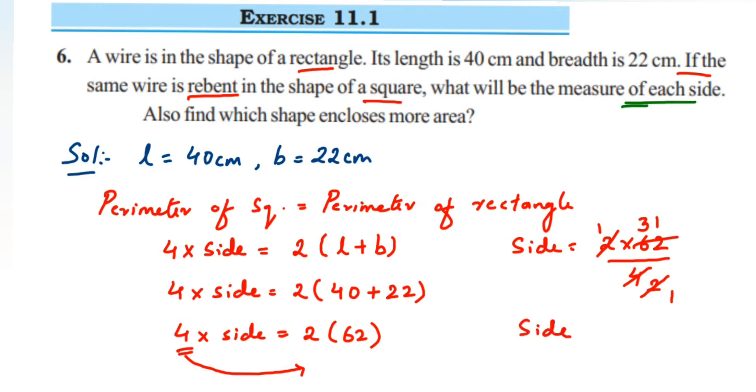2 × 31 is 62, so we get side is equal to 31 centimeters. So the first question is solved - side is equal to 31 centimeters.